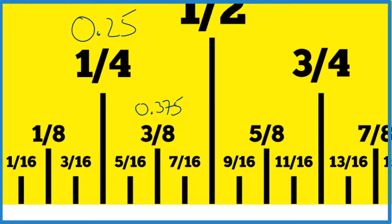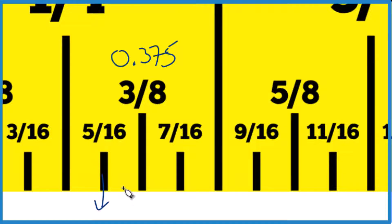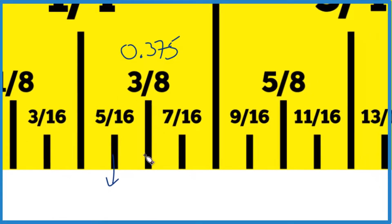Let's convert five-sixteenths. Five divided by 16 turns out to be 0.3125. So it's going to be pretty close to five-sixteenths on a ruler. It'd be between five-sixteenths and three-eighths.